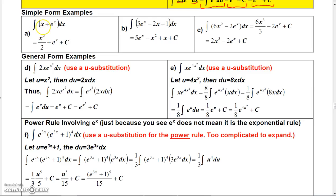Here are some examples that use the simple form. This is just x plus e to the x dx. You know how to integrate x using the simple power rule — you get x squared over 2 — and integrating e to the x gives e to the x plus a constant.